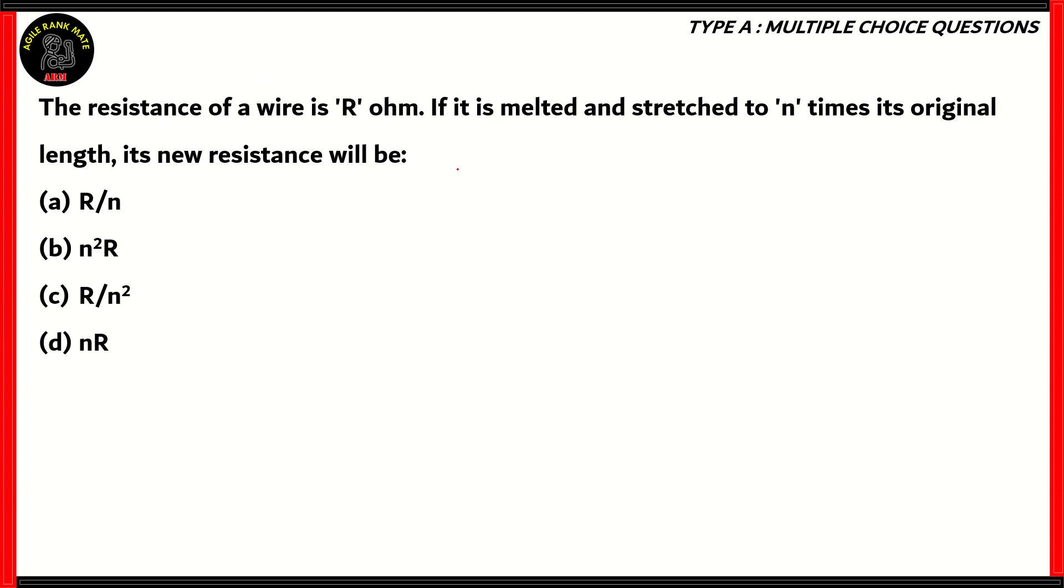Well, for that, we need to find out the formula for resistance, which involves its length. Now, that formula is R = ρL/A. Rho is resistivity, L is length, A is area. But here lies the problem. Trying to compare the old resistance and the new resistance by using this formula would be incorrect, because the process used to change the length of the wire is melting and stretching.